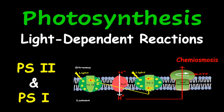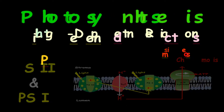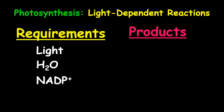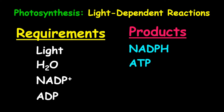A nice way to start is to look at the requirements and also the products of these reactions. The requirements include light, water, NADP+, and ADP. The products from these reactions include NADPH, ATP, and oxygen gas. Oxygen is a waste or by-product.